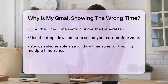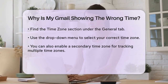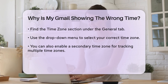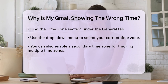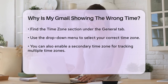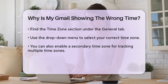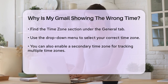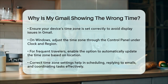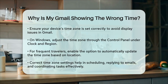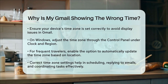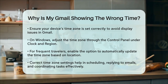If you travel frequently, you might want to set your Gmail to automatically update the time zone based on your location. To do this, make sure the 'Ask to update my primary time zone to the Current Location' checkbox is enabled in your Google Calendar settings.